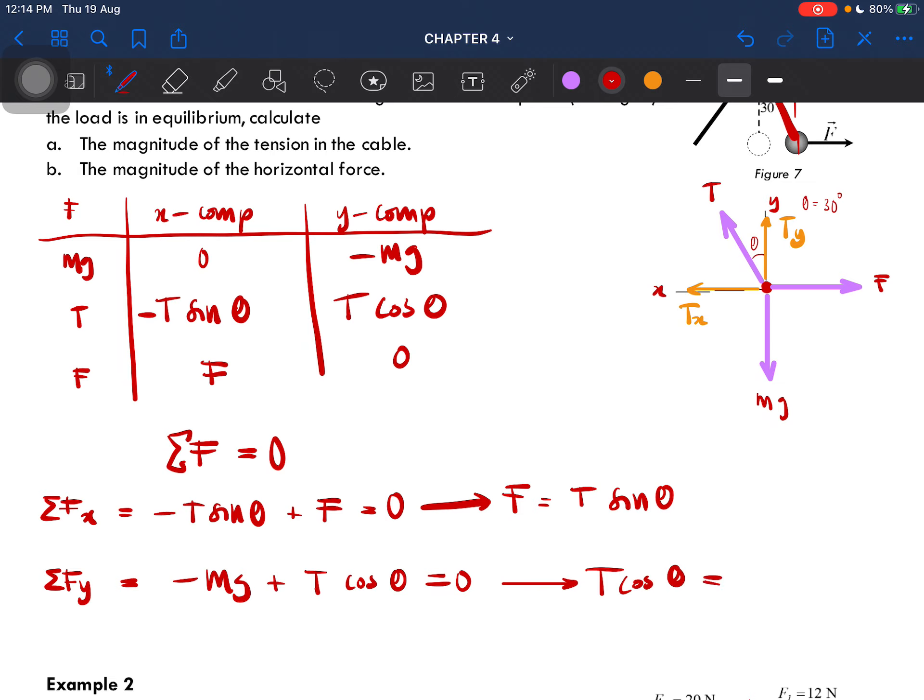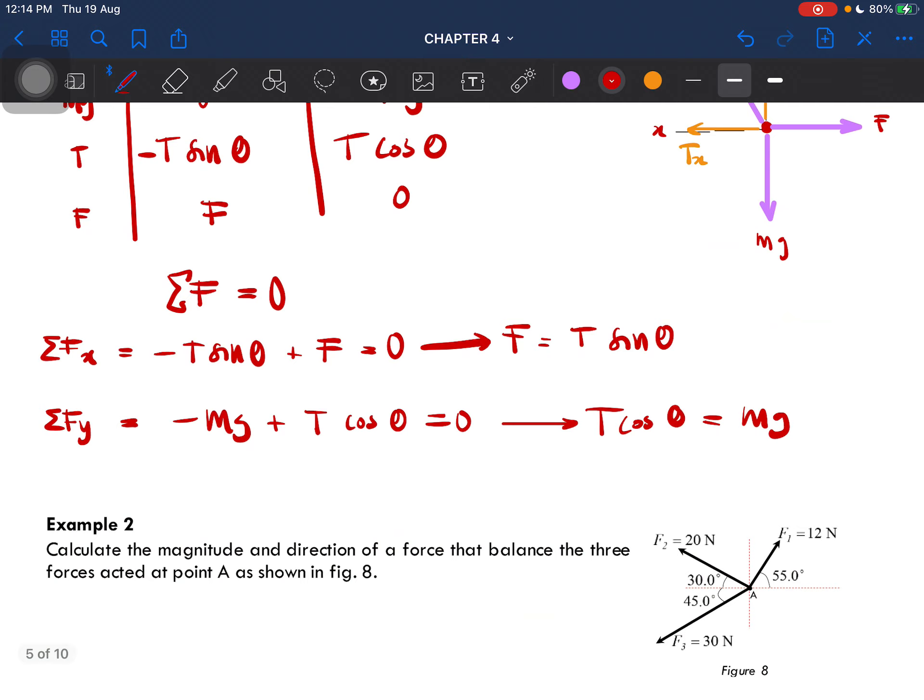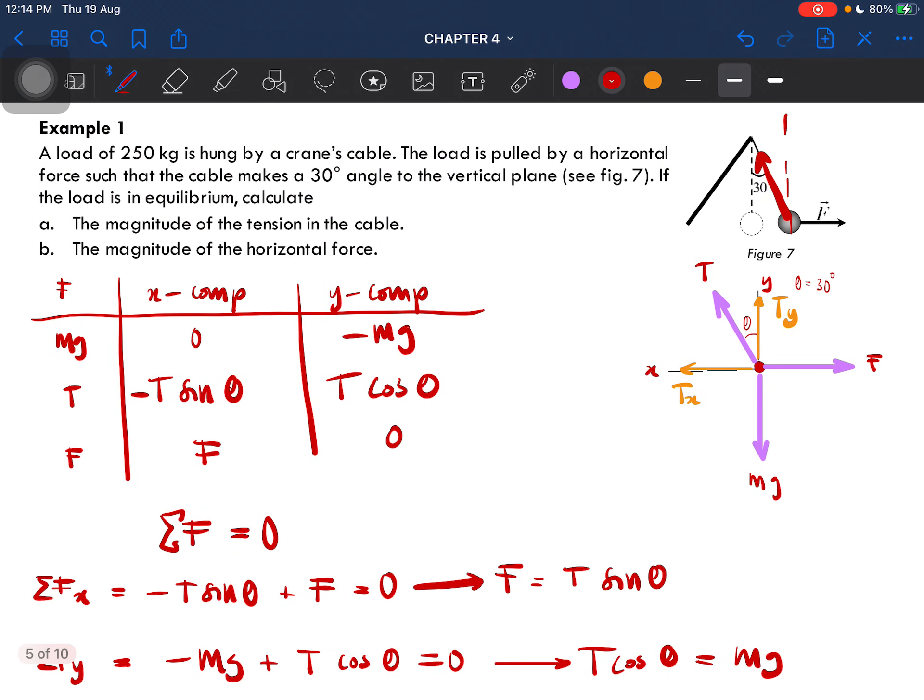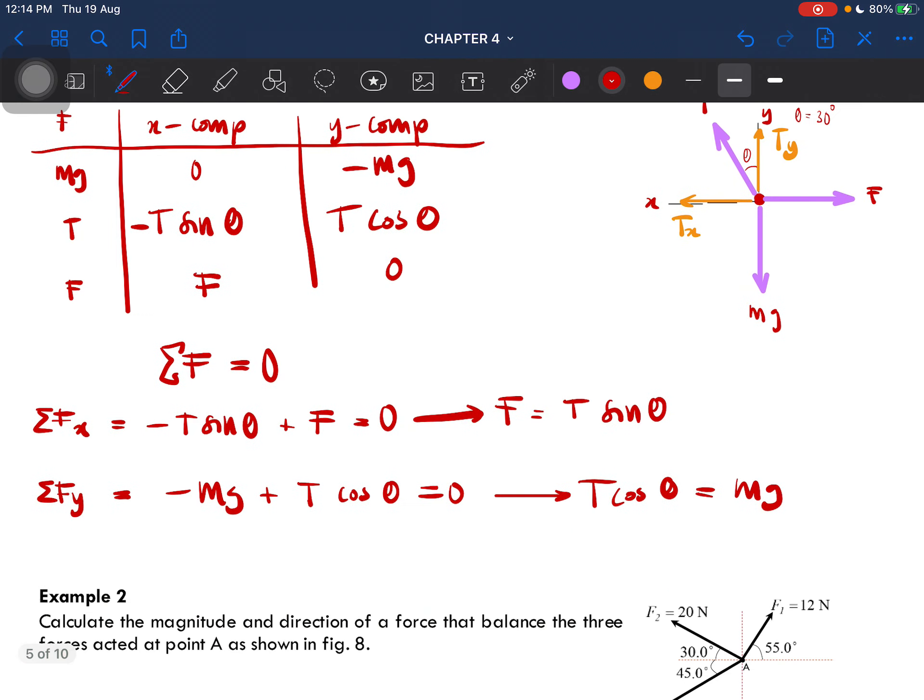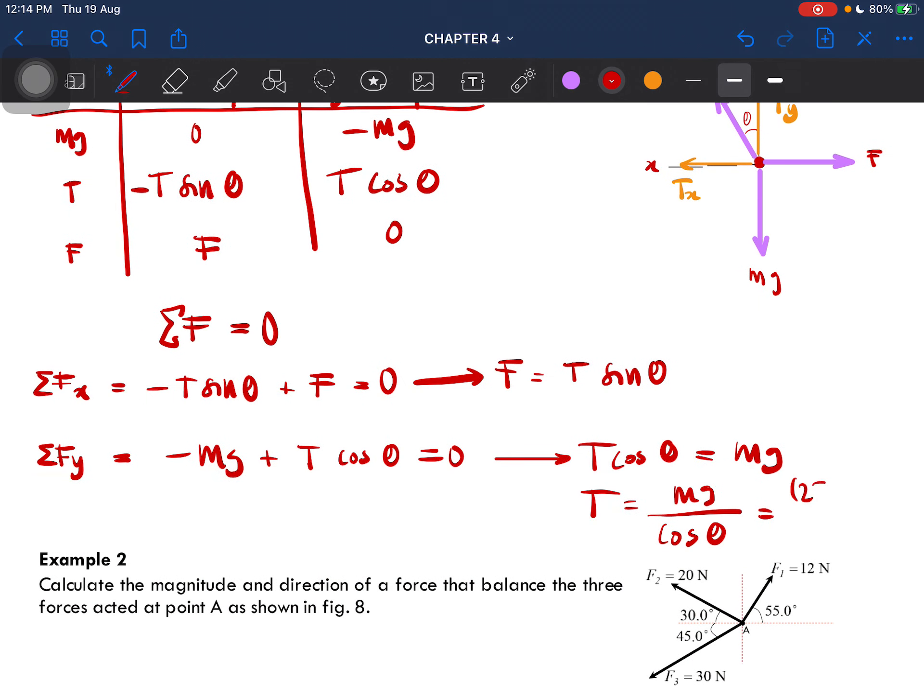We are trying to look for the tension first. The y component gives us T equals mg over cos theta. So substitute: m is 250 kilogram, g is 9.81, and cos is 30 degrees. Then you'll get the tension to be 2833 newton.